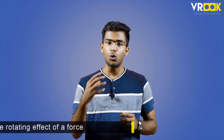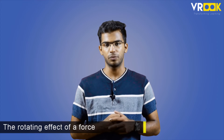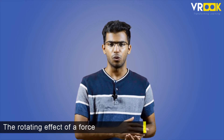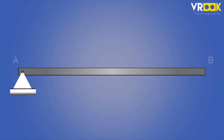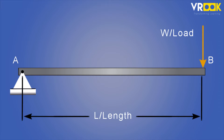A moment is defined as the rotating effect of a force. It is the product of force acting on the object multiplied by a perpendicular distance. For example, consider a beam where W is the load acting on the beam at a distance L from point A. Then the moment about A is given by W multiplied by L.